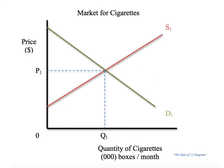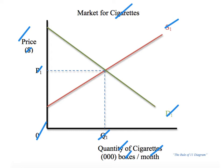If you've seen my other videos, I have something called the Rule of 11, and it's proven itself to be exceptionally helpful for students. In almost every microeconomic situation, you're going to start with the same graph — a very simple demand and supply diagram with a P1, Q1. It has 11 aspects to it: one, two, three, four, five, six, seven, eight, nine, ten, eleven. You need those 11 parts of a diagram in microeconomics to begin.